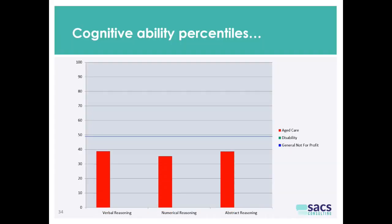Firstly, what we want to do is show you the scores for verbal reasoning, numerical reasoning, and abstract reasoning. I did define these three in earlier videos, but verbal reasoning is to do with words and numerical reasoning is to do with numbers.